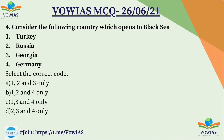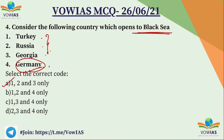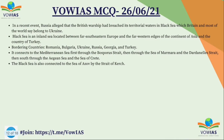The fourth question: which of the following countries are open to the Black Sea? 1. Turkey, 2. Russia, 3. Georgia, 4. Germany. The correct answer is A — 1, 2 and 3 only, because Germany has no border with the Black Sea. Recently, Russia alleged that a British warship breached its territorial waters in the Black Sea, which Britain and most of the world consider to belong to Ukraine. Russia has annexed Crimea, creating an ongoing tussle with the West.